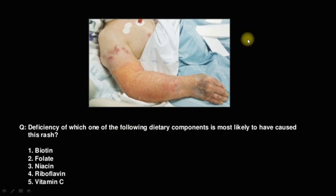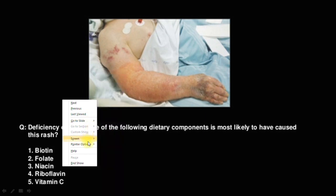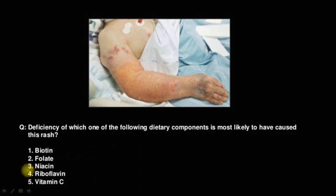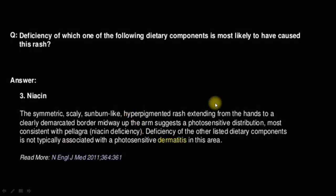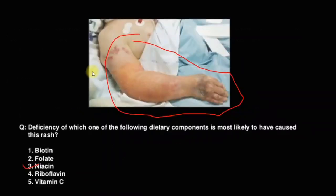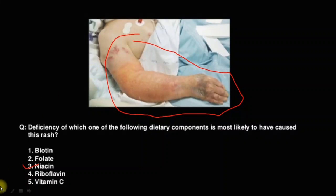This is a picture of a hand with photosensitive dermatitis resembling a sunburn. The deficiency options are biotin, folate, niacin, riboflavin, and vitamin C. The answer is niacin. Niacin deficiency is the most common cause of photosensitive dermatitis. There is a sunburn-like hyperpigmented rash with a clearly demarcated border in a photosensitive distribution — this is pellagra, caused by niacin deficiency. Biotin, folate, and riboflavin deficiencies present with other features.